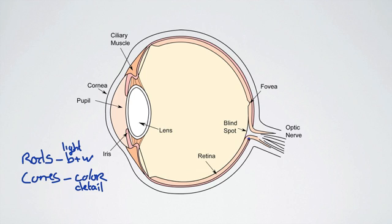Alright, so we have the rods and the cones in the retina. And the place where we have the most pigment would be in the fovea. Okay, and we have especially a lot of cones in this area.